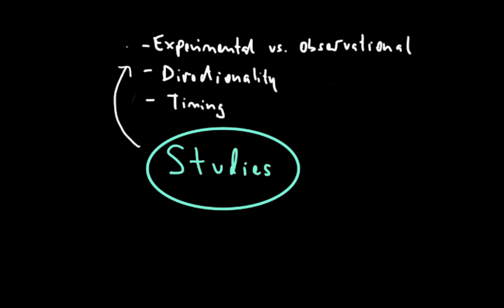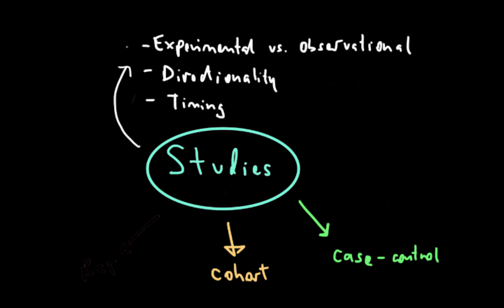In this video, we're going to be talking about two specific types of studies: one, cohort studies, and two, case control studies. We'll be discussing what they are, their pros and cons, and which characteristics of studies we talked about in the last video each of them retains.